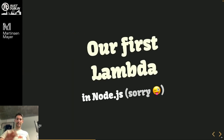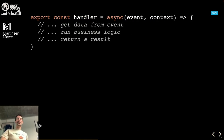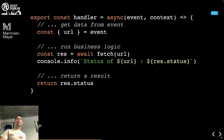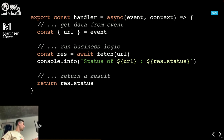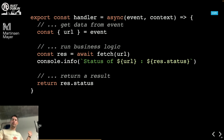Let's write our first Lambda. Starting with Node.js for comparison: it's an async function that receives an event, you run business logic, and return a result. A practical example is a ping system that receives a URL in the event payload, does an HTTP fetch request to that URL, and returns the status code — useful as a simple health check.